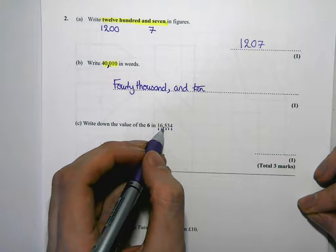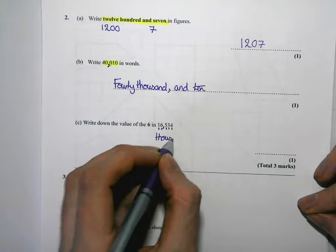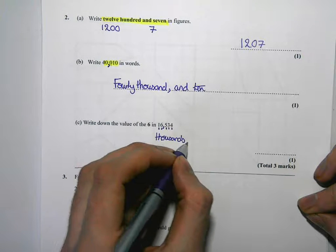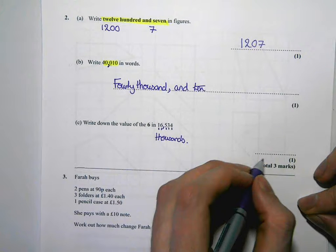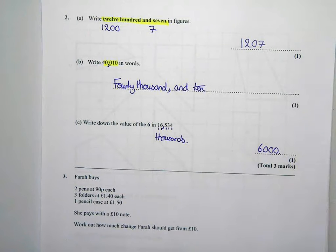So the 6 is in the thousands column. That 6 stands for 6,000, so we just need to write 6,000 here. That's the answer.